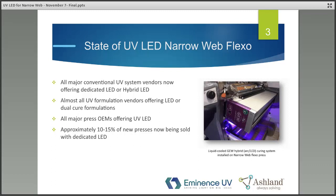Now fast forward to 2019: all major conventional UV system vendors are now offering either dedicated LEDs or hybrid LED systems. A hybrid LED allows you to swap the cassette back and forth between a conventional mercury lamp and an LED. Almost all formulation vendors are offering either LED formulations or dual-cure formulations, since conventional inks, coatings, and adhesives formulated for mercury do not cure with LED. Dual-cure formulations are formulated for LED but are backwards compatible with mercury, and that seems to be the direction most formulators are going.